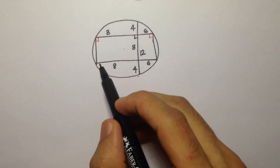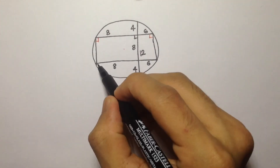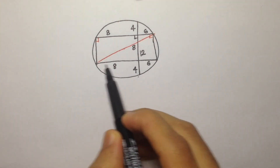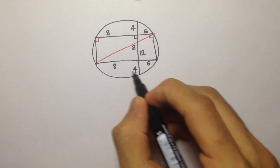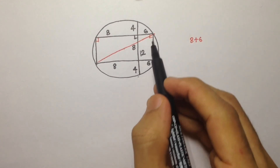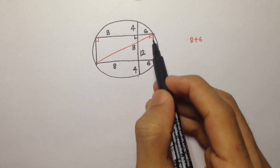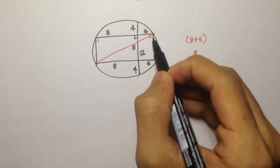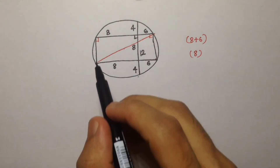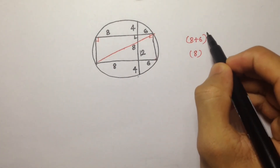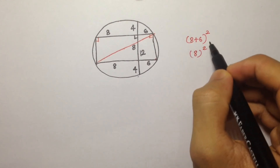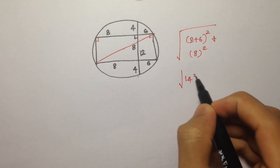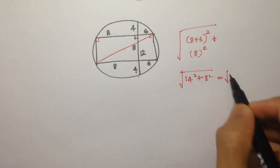We now have a rectangle and its circumcircle. The diagonal of the rectangle is the diameter of the circle. The two sides of the rectangle are: one side is 8 plus 6 equals 14, and the other side is 8. So the diagonal — and thus the diameter — is the square root of 14 squared plus 8 squared, which is the square root of 196 plus 64, giving root of 260.